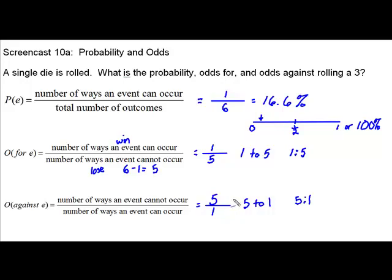However, remember, we're going to leave odds as a ratio, whereas probability, we do have the option of changing it to a decimal or to a percent. Thank you for watching this screencast.